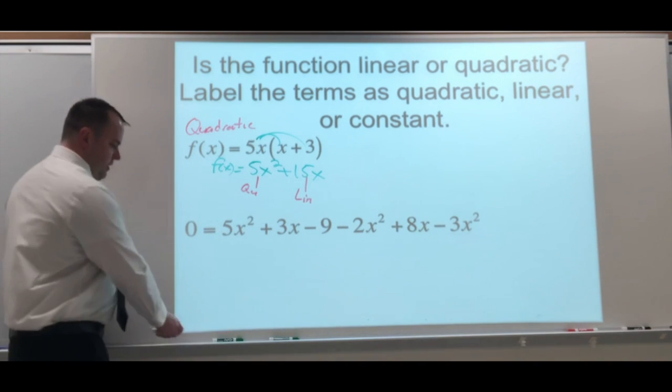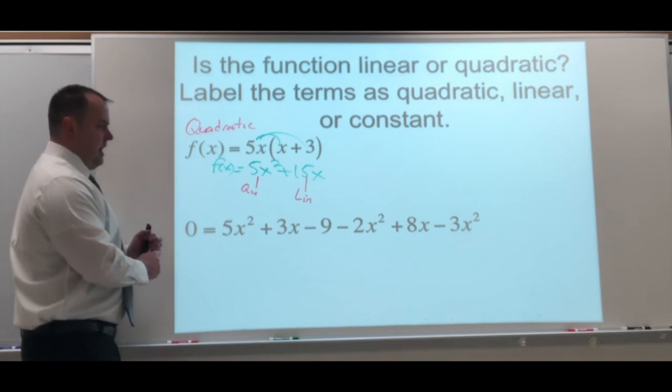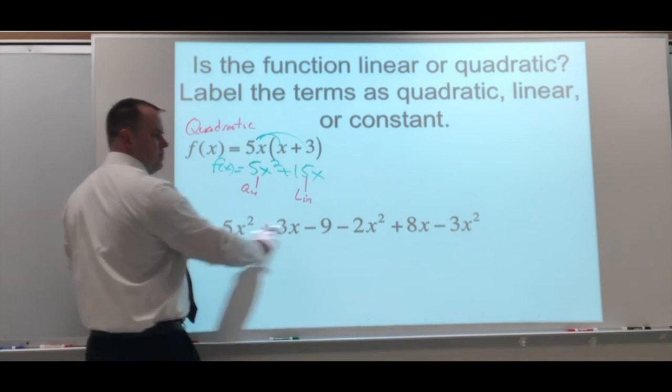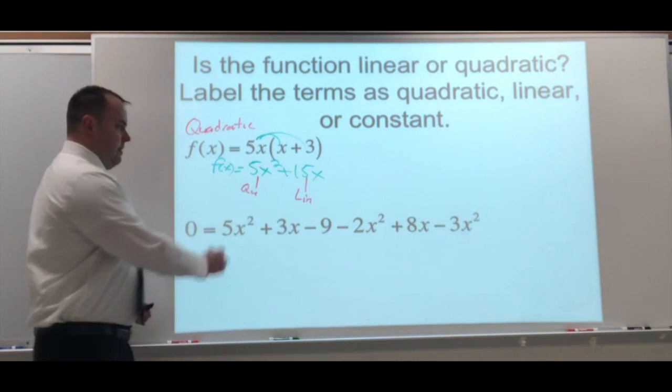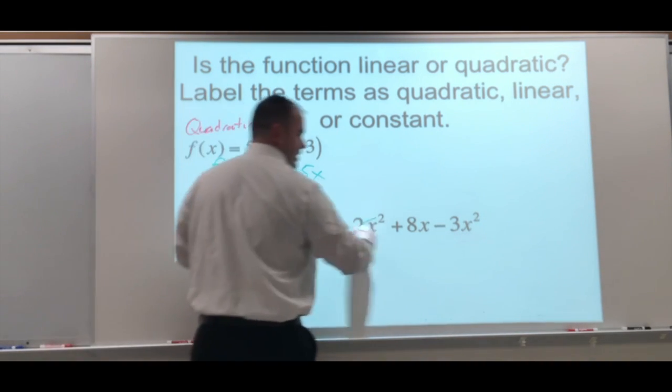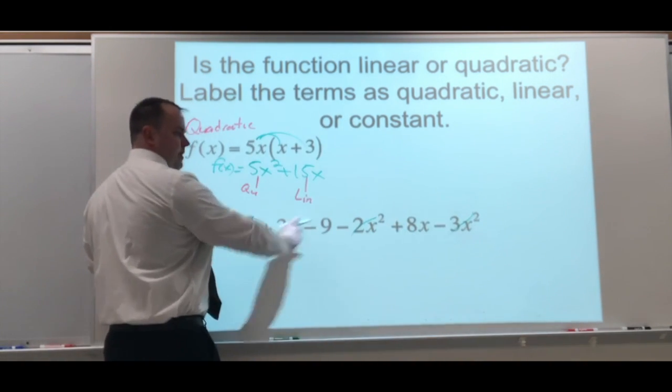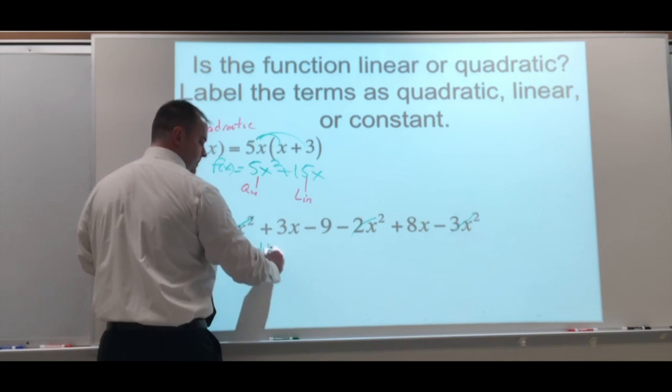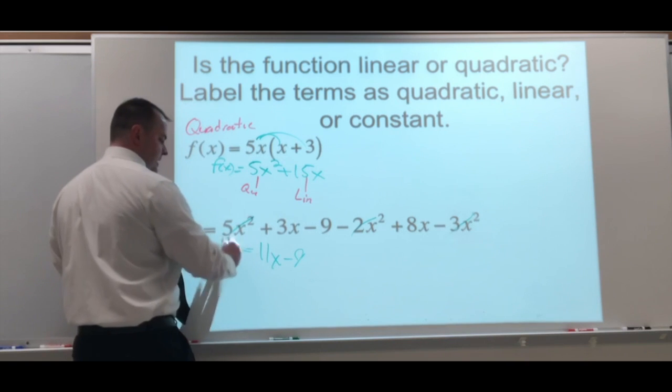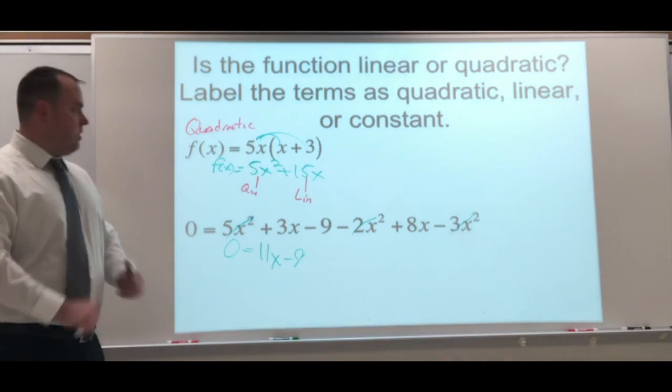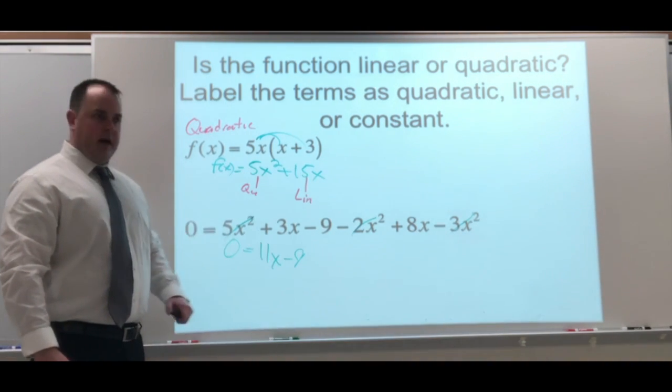The next one here. If we combine these like terms, we have 5x squared minus 2x squared minus 3x squared. They cancel out. 5 minus 2 minus 3 is 0. Then we have 3x and 8x minus 9. In this case here, there is no square. All we have is 11x minus 9. So the whole equation here is going to be linear.